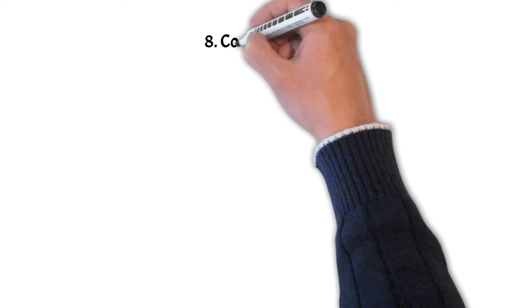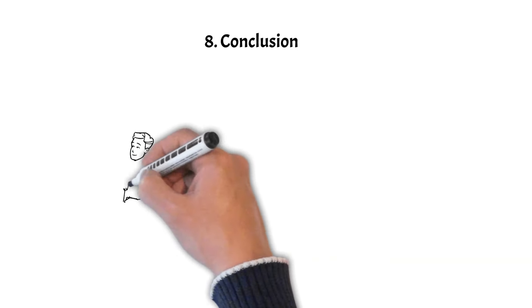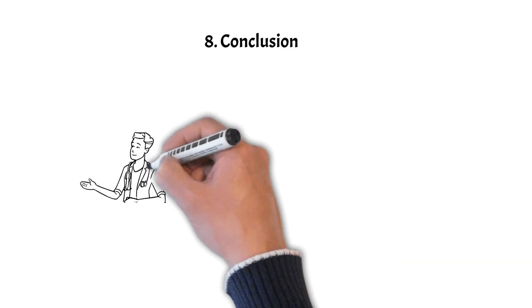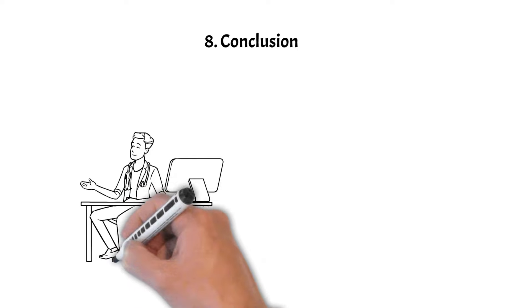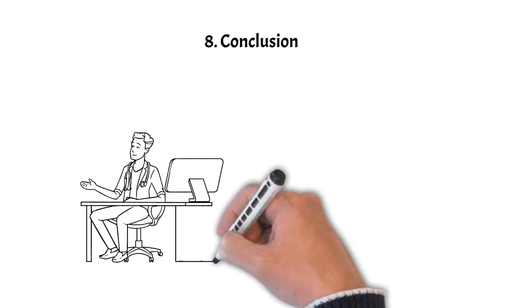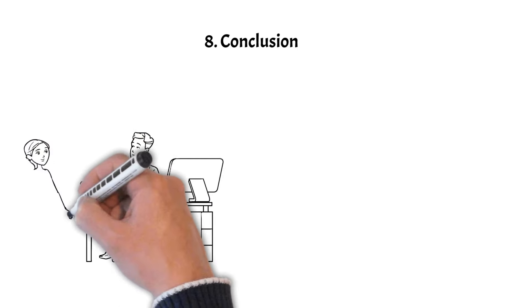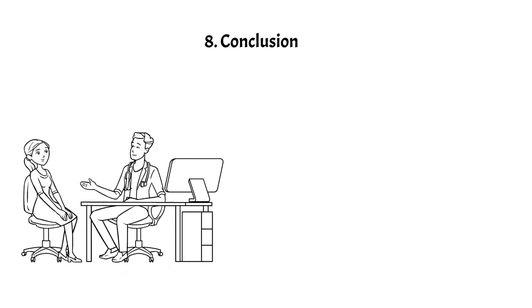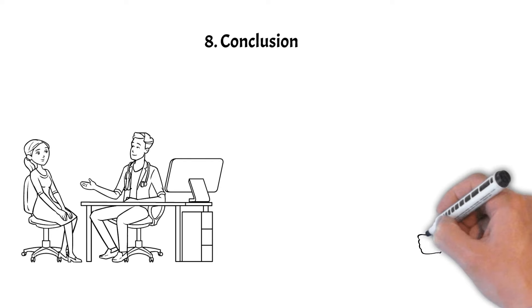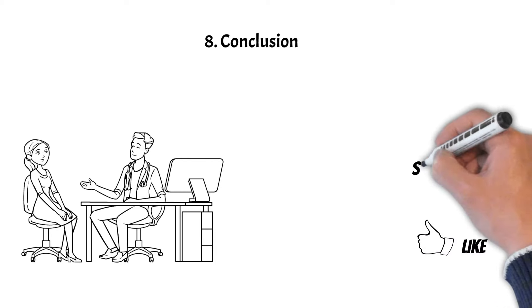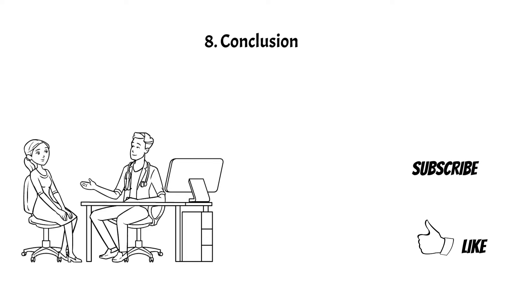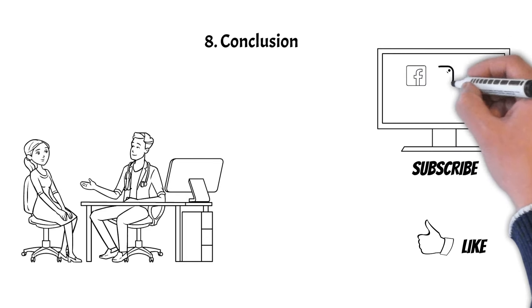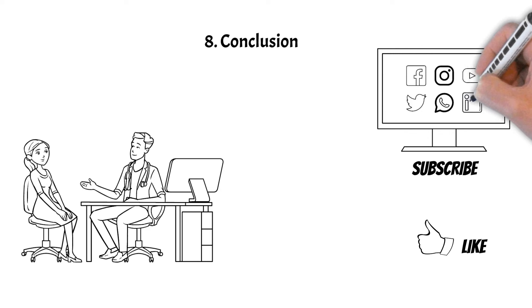Eighth, conclusion. Quality isn't just a goal — it's a dynamic and ongoing process that requires constant attention and effort. By integrating quality standards, engaging stakeholders, emphasizing prevention, and fostering a culture of continuous improvement, you can make quality an integral part of your project's success. See you in the next video.